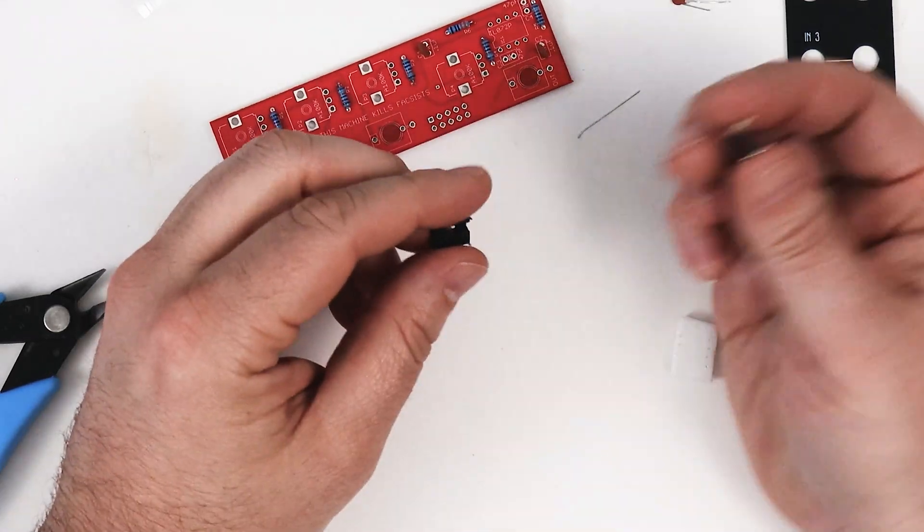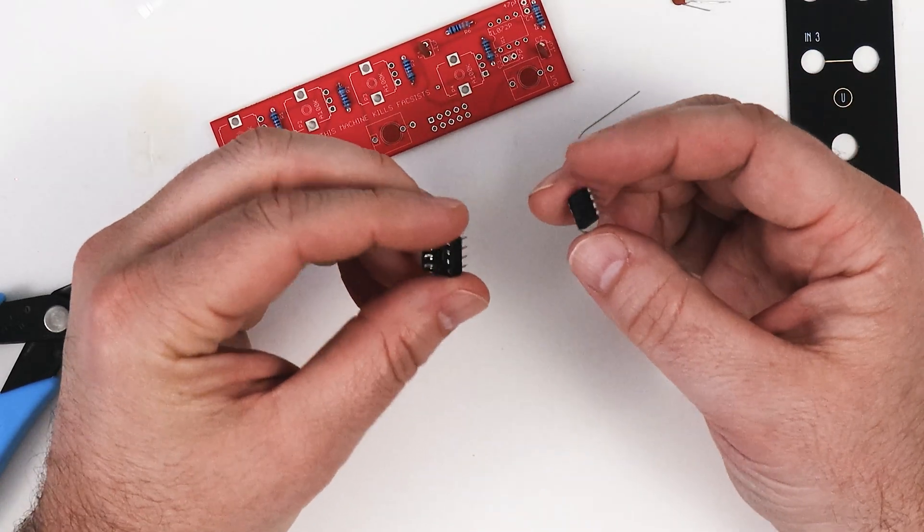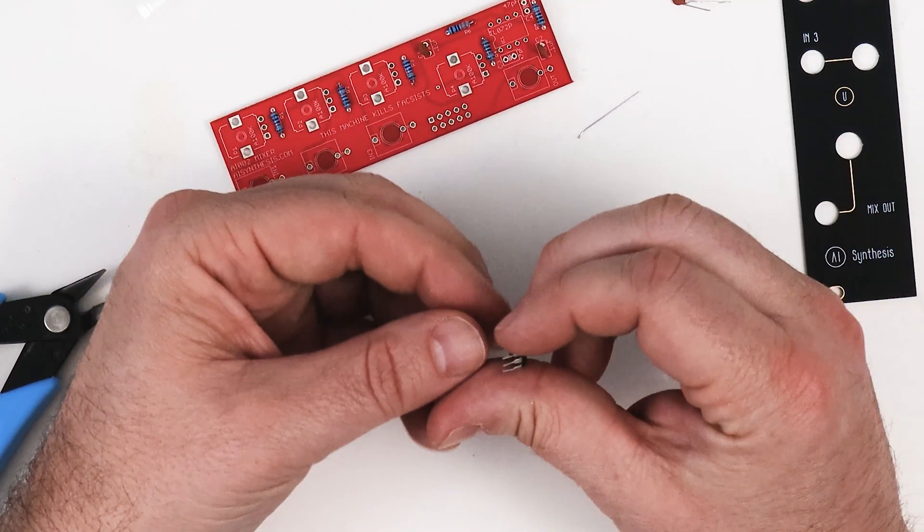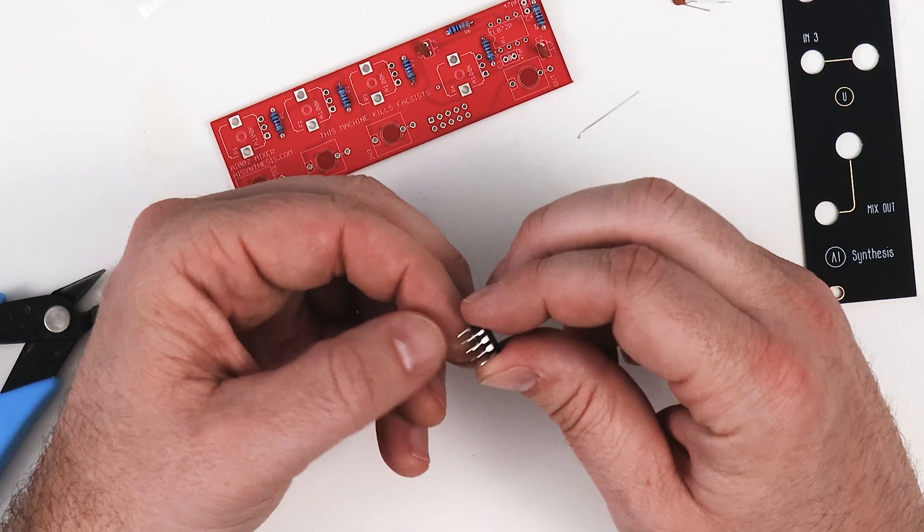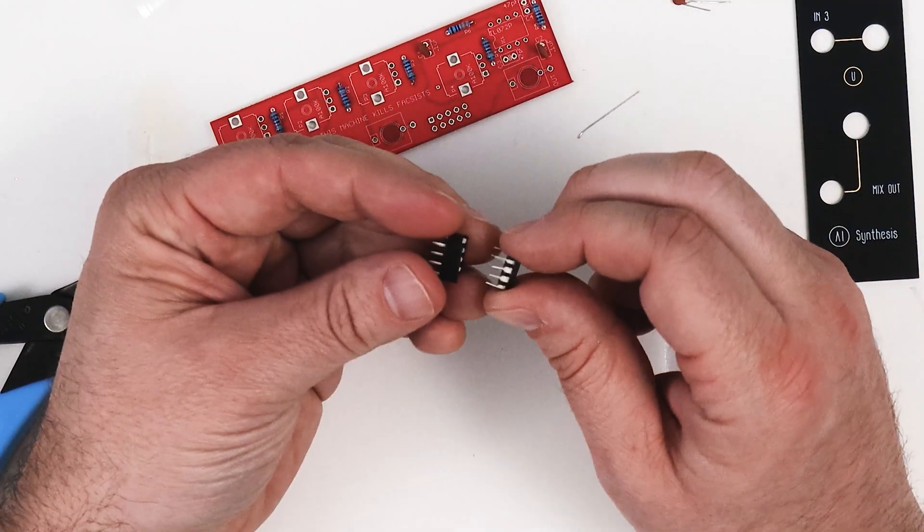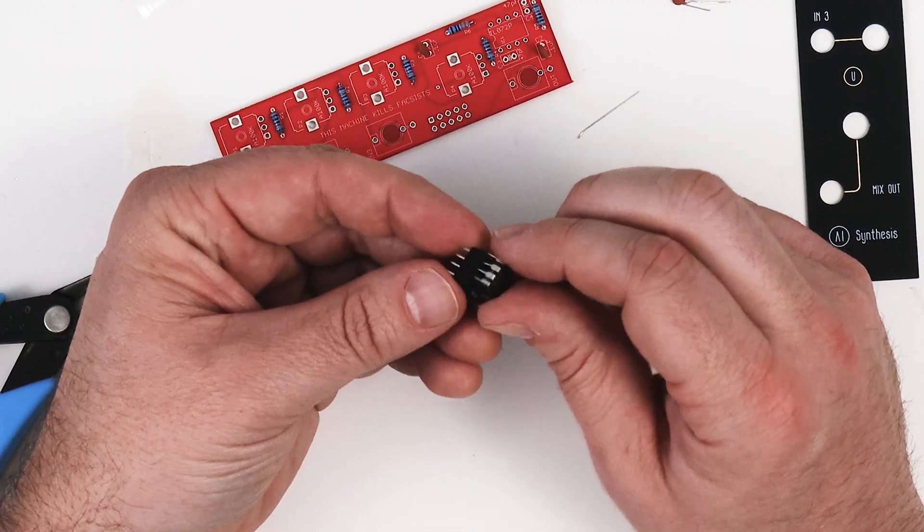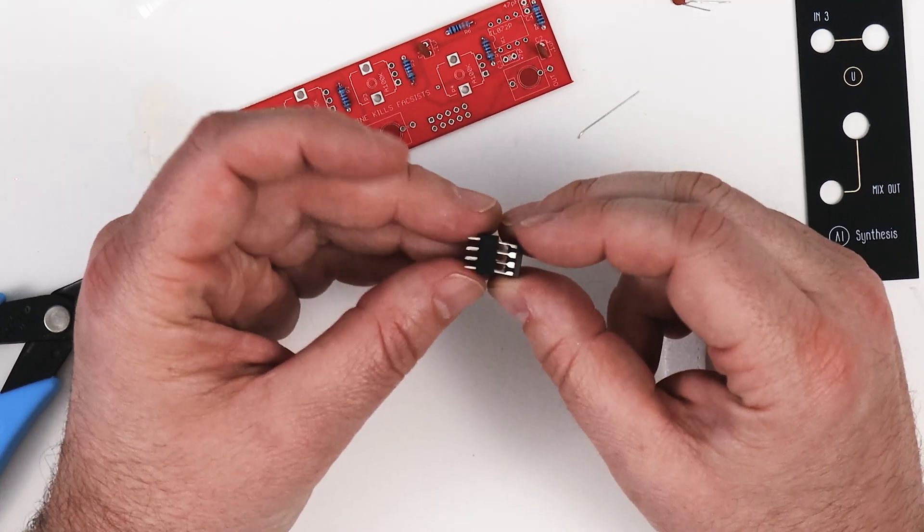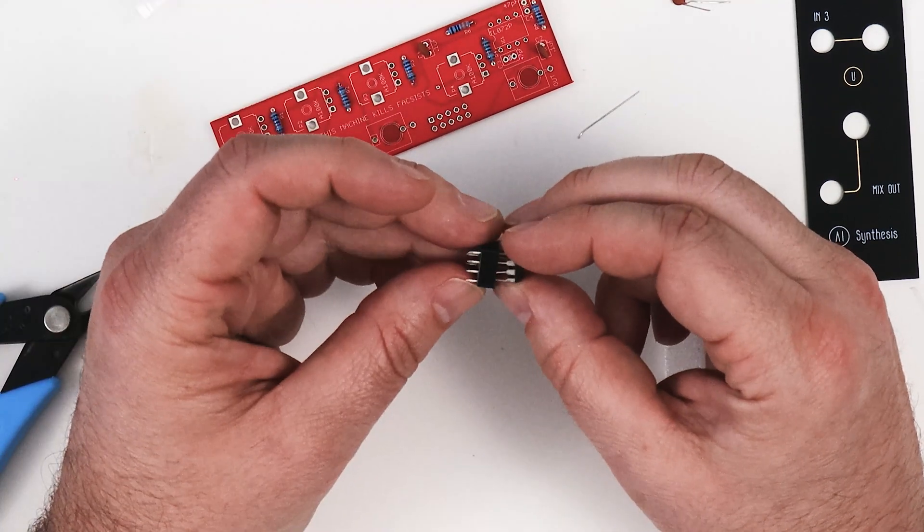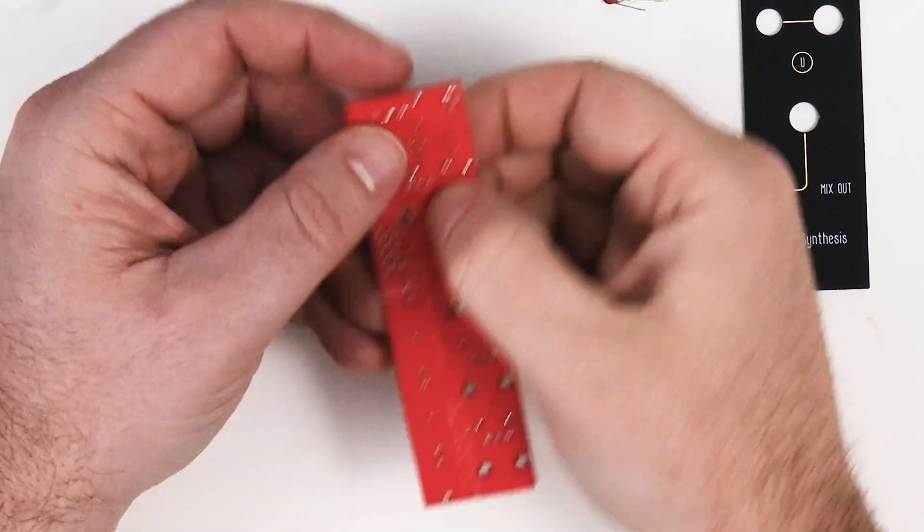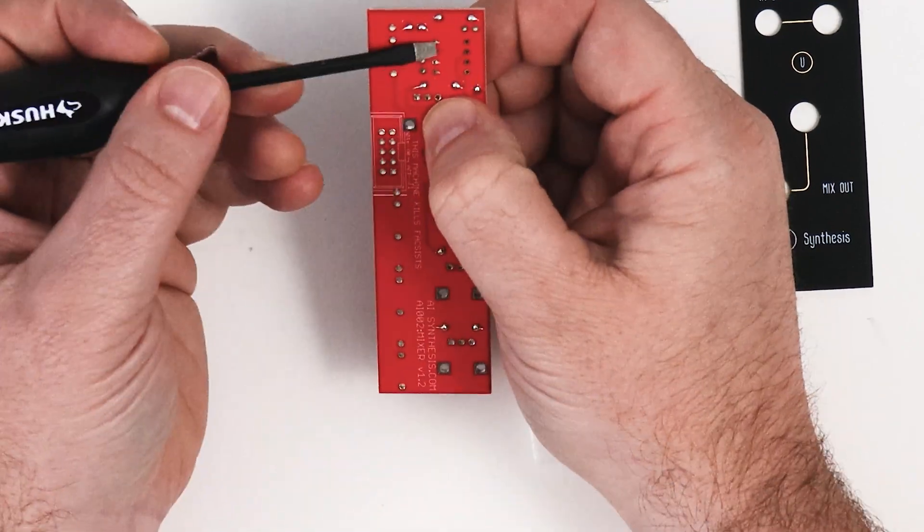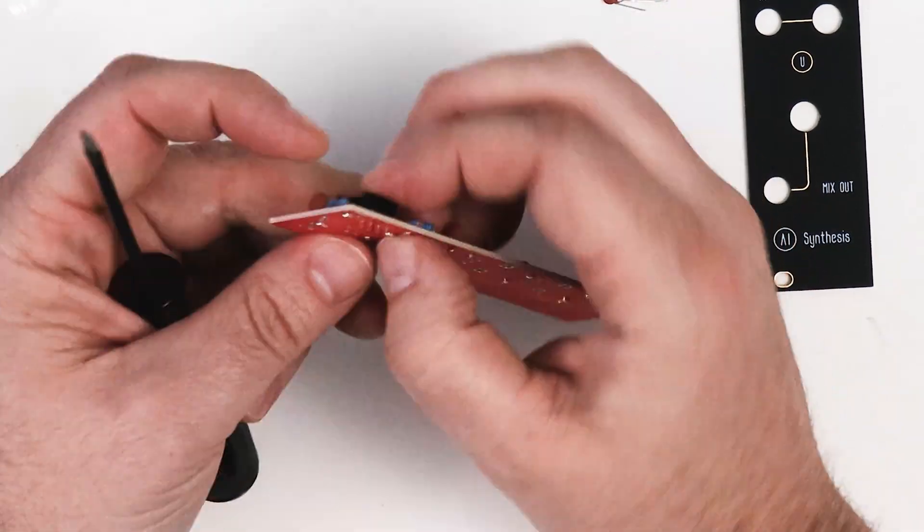So this is the IC socket and chip, and one thing I learned is that the chips are susceptible to heat, so they give you this little socket that you're supposed to solder in, and then you can insert the chip after. That way the chip doesn't actually need to be soldered with heat. So I put it in and bent down the edges so that it stays in place, and then I soldered it.